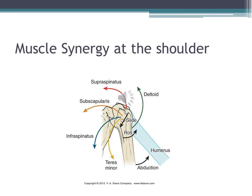The supraspinatus and deltoid work together to help produce elevation, while the other rotator cuff muscles pull down the humeral head and allow it to rotate — preventing impingement at the shoulder. The combination of muscle synergies at the glenohumeral joint and the scapulothoracic joint together provide for functional elevation. When we start to see shoulder pathologies, checking that all these muscles are working together properly is one of the first things we look at.